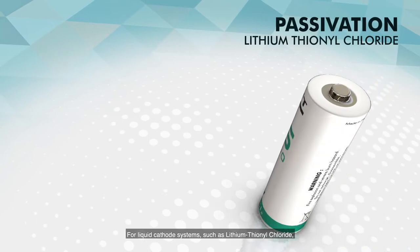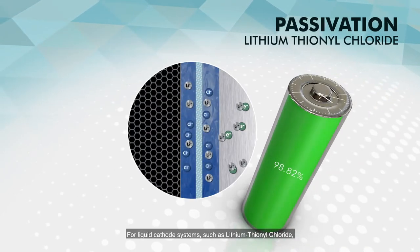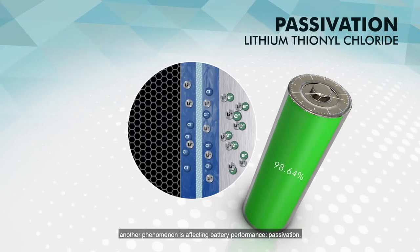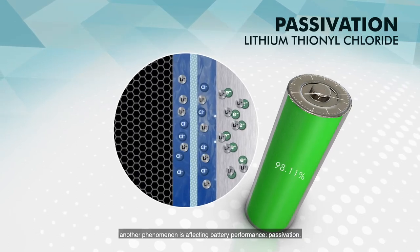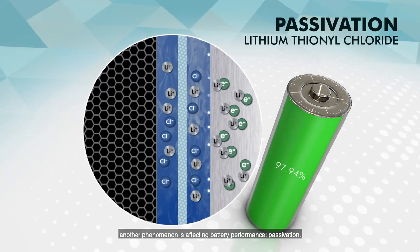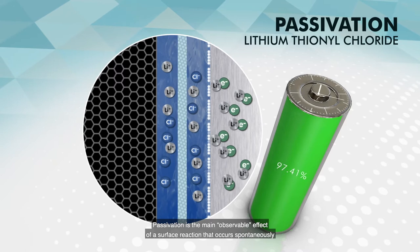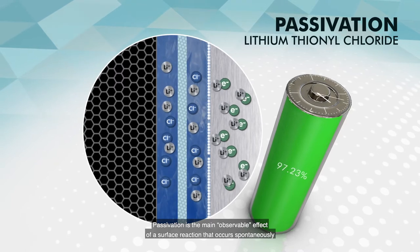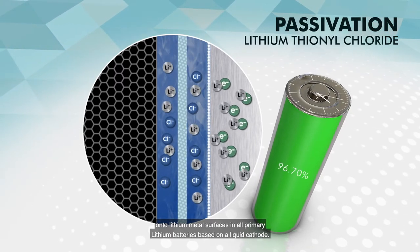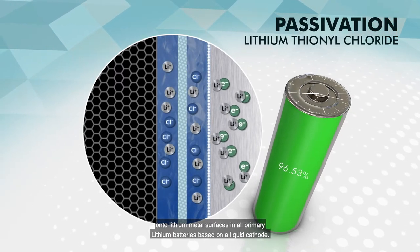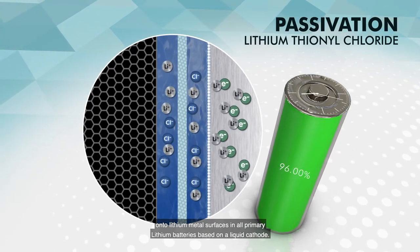For liquid cathode systems, such as lithium thionyl chloride, another phenomenon is affecting battery performance: passivation. Passivation is the main observable effect of a surface reaction that occurs spontaneously onto lithium metal surfaces in all primary lithium batteries based on a liquid cathode.